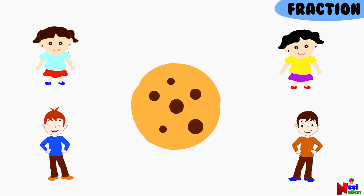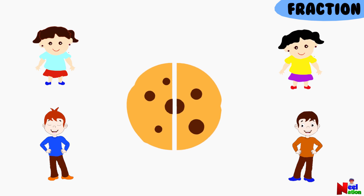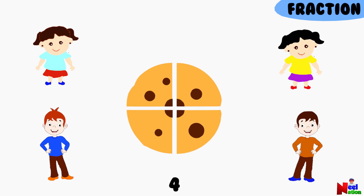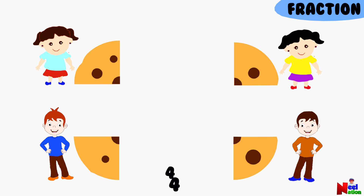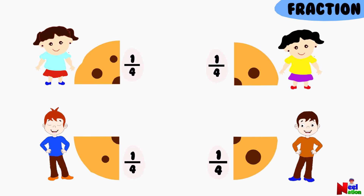Let's imagine, if you have four friends and just one cookie, how will you share the cookie equally among all the four friends? I would break the cookie into four equal parts, then give one part to each friend. Each friend gets one of the four parts of the cookie. In other words, each friend gets one fourth of the whole cookie.